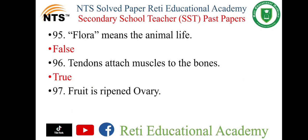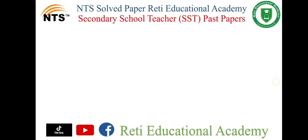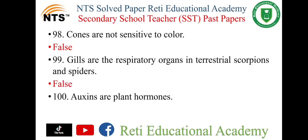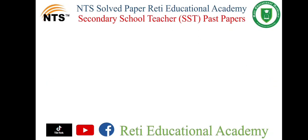Question number 97: Fruit is ripened ovary — and it is true. Question number 98: Cones are not sensitive to color — it is false. Question number 99: Gills are the respiratory organs in terrestrial scorpions and spiders — it is false. Question number 100: Auxins are plant hormones — it is true.